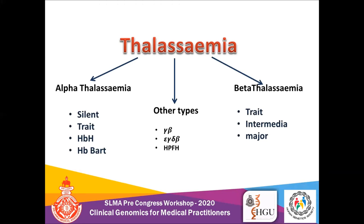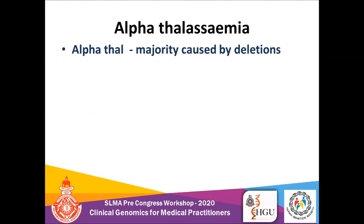Regarding hereditary persistent fetal haemoglobin: this occurs when more than the normal amount of fetal haemoglobin persists into adult life. Usually the amount of fetal haemoglobin reduces after six months of postnatal life, but in this condition it persists into adulthood. Sometimes this may be beneficial, especially in the case of beta thalassemia major, because the clinical picture may not be that severe as they have some amount of functioning haemoglobin.